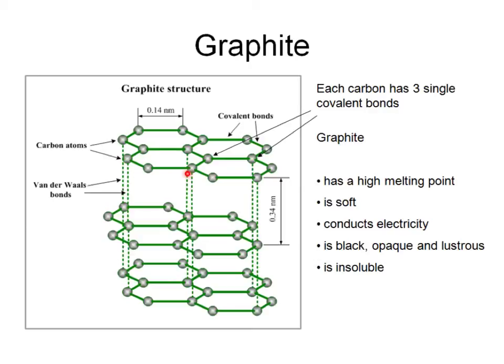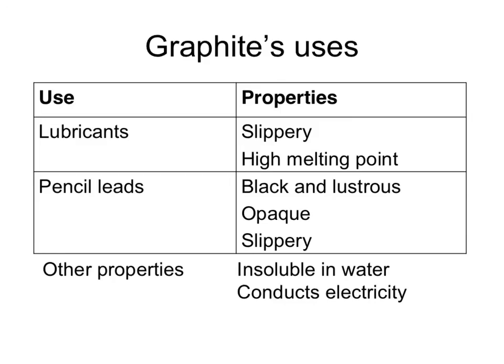Graphite is also insoluble in water. Graphite is used in dry lubricants — for example, in door locks — because it is slippery and because it has a high melting point. The high melting point wouldn't be as important as a lubricant in door locks, but it would be in large machinery which would get hot. Graphite is also used in pencil leads, mixed in with clay. It's used in pencil leads because it's black and lustrous, so it makes a black mark. It's opaque, which means you can't see through the marks. And it's slippery, which means layers slide off the pencil lead and onto the paper.